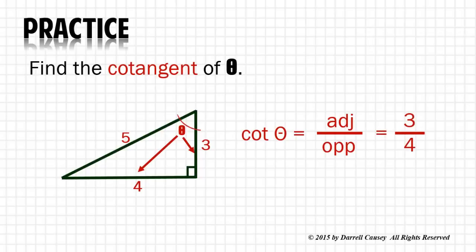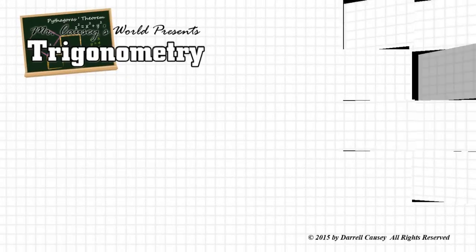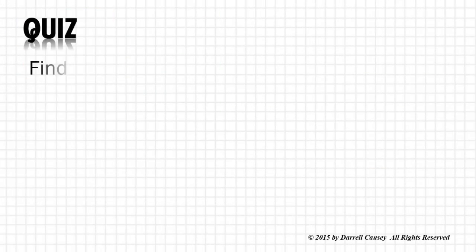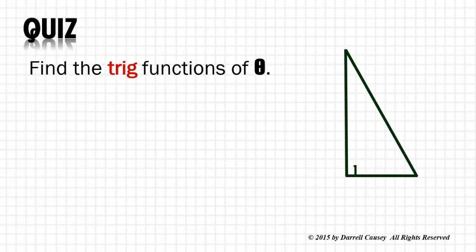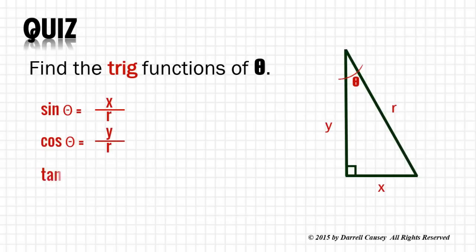It's very important you get these ratios down. Let's take a quiz. Find the trig functions of the following right triangle and angle θ. Sine θ is x over r because r is our hypotenuse. Cosine θ is y over r. Tangent θ is x over y. These are very common definitions of the trig functions and it behooves you to know them.